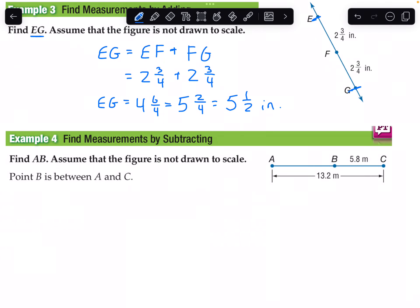Example 4, find measurements by subtracting. Find length AB. Assume the figure is not drawn to scale. AB is here. Let's give it a variable X. We know total length AC equals the sum of the two partial lengths. So 13.2 meters equals X plus 5.8 meters.